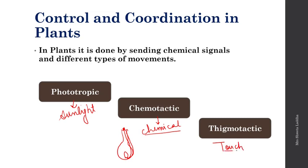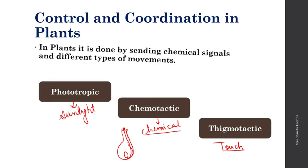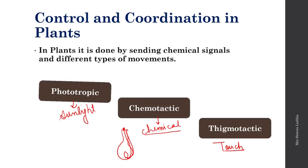Thigmotactic movement is movement in response to touch — for example, in the touch-me-not plant, if you touch the leaves they will close. These are the different types of movements carried out in plants for control and coordination: phototropic, chemotactic, and thigmotactic movement.